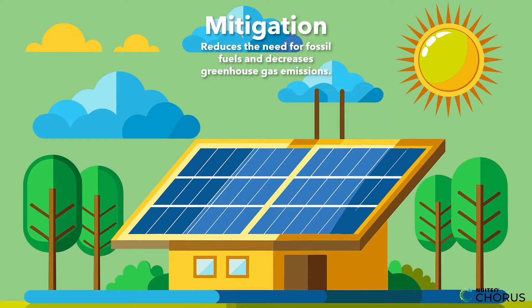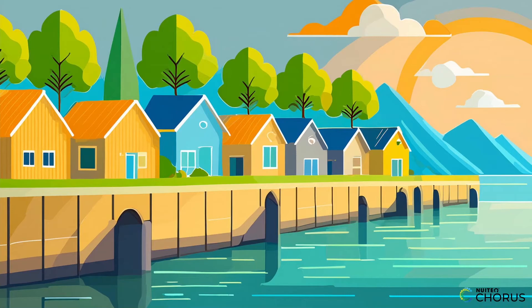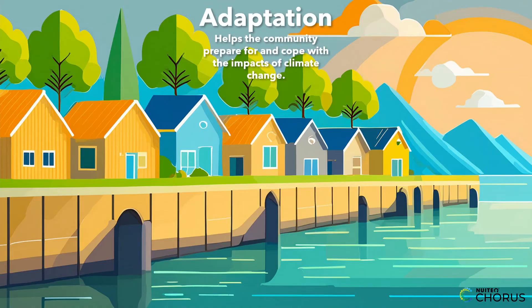Now, let's consider a coastal community building seawalls and levees to protect against rising sea levels and storm surges. This is an example of adaptation, as it helps the community prepare for and cope with the impacts of climate change.